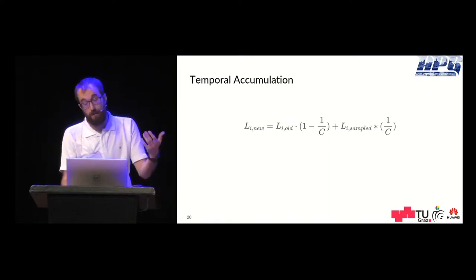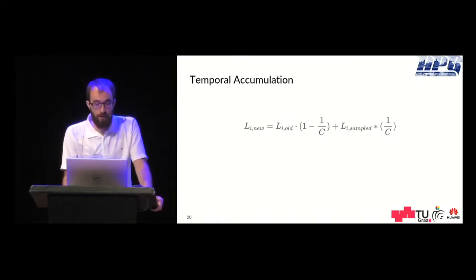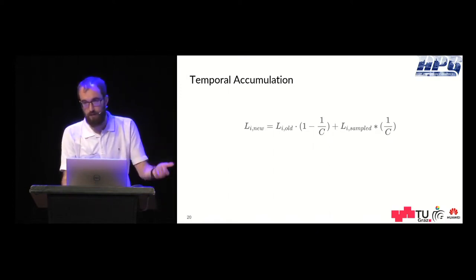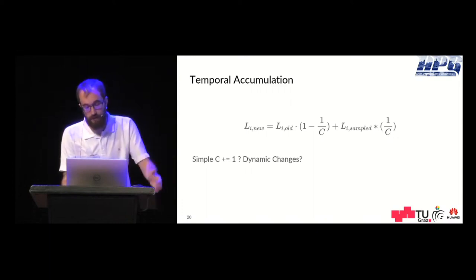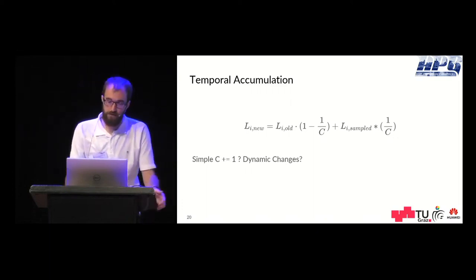I mentioned temporal accumulation quickly before. We do this very simply where we have the old value times a factor plus the newly sampled value times a factor and that's how we get our new radiance.